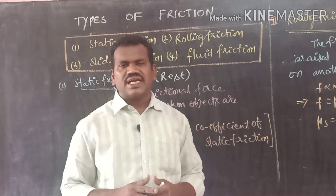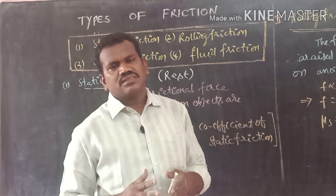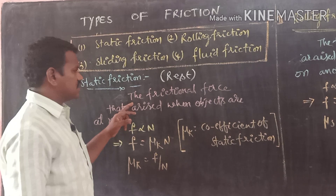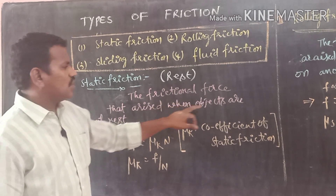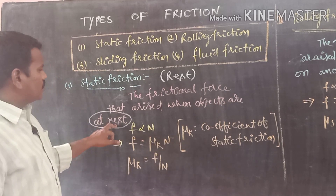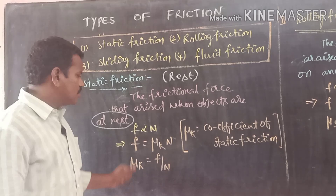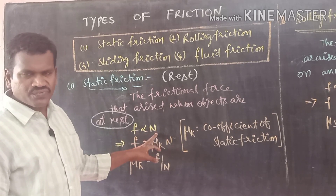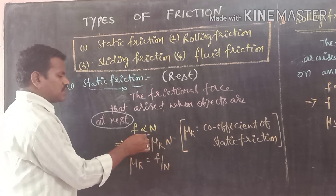So, what is the meaning of static friction? If both the bodies in contact are at rest, the force between them is called static friction. See the definition: the frictional force that arises when the objects are at rest is called static friction. The word 'static' indicates rest. Here also, frictional force F is directly proportional to normal force N.